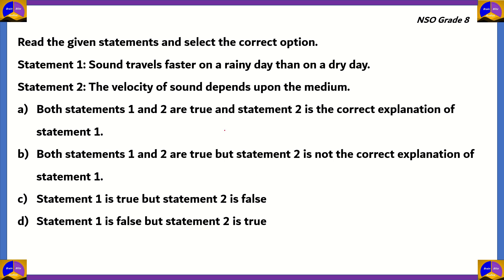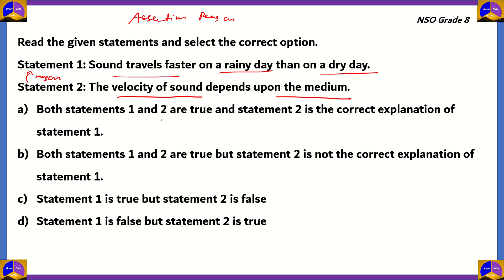Now if we look at this question, it is again a question with two statements. However, this time we need to find out whether these two statements are correct, and if the second statement is the reason for the first — this is what we call an assertion-reason type question. Statement one says sound travels faster on a rainy day than on a dry day. Statement two says the velocity of sound depends upon the medium. When approaching an assertion-reason question, it's best to focus on the two statements individually first.